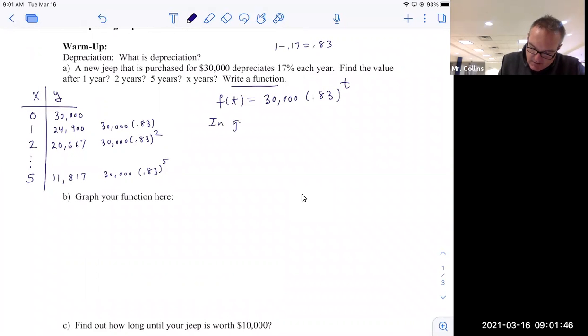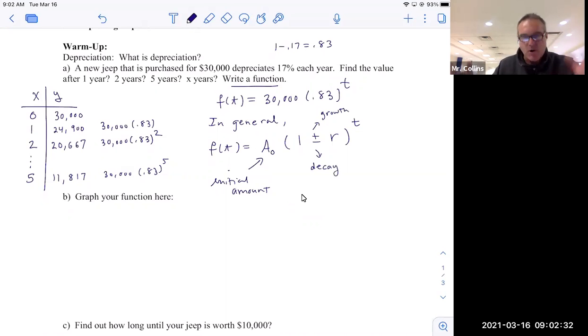Or in general, right, we want to generalize this so we can do other problems, not just Jeeps, but anything that goes up or downhill in value. So in general, the amount you have is going to be some initial amount, which we'll call a sub zero, and then one plus or minus r to the t. So that's my initial amount. And then plus would be for growth, exponential growth. A minus would indicate exponential decay. In other words, we're going downhill. Of course, r is my interest rate, and t is a time unit normally in years, right?